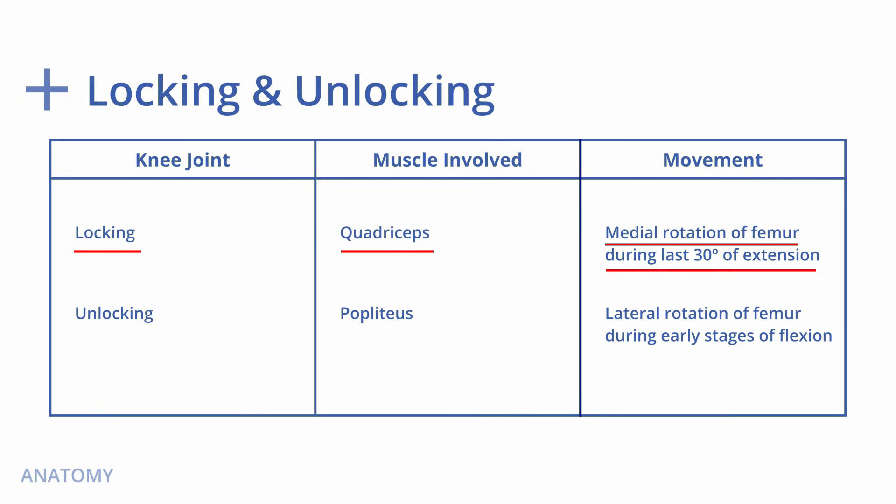The principle behind locking is as follows: the anteroposterior diameter of the lateral femoral condyle is less than that of the medial condyle. Because of this, when the lateral condylar articular surface is fully used up by extension, a part of the medial condylar surface remains unused. As a result, the lateral condyle serves as an axis around which the medial condyle rotates backwards — that is, medial rotation of the medial condyle of the femur — leading to locking of the knee joint.